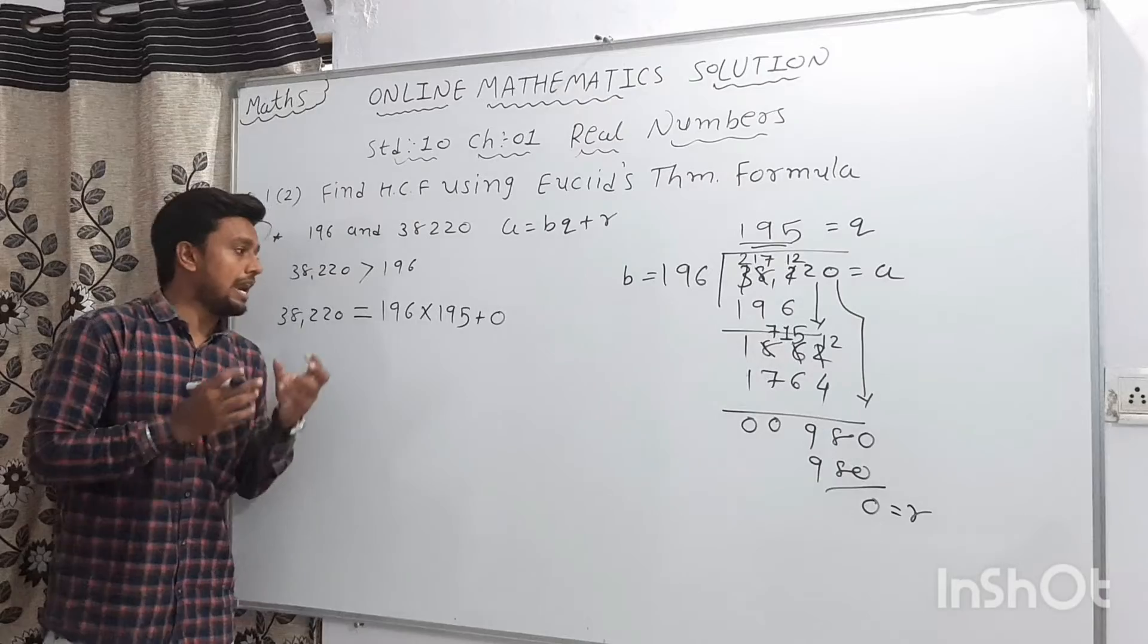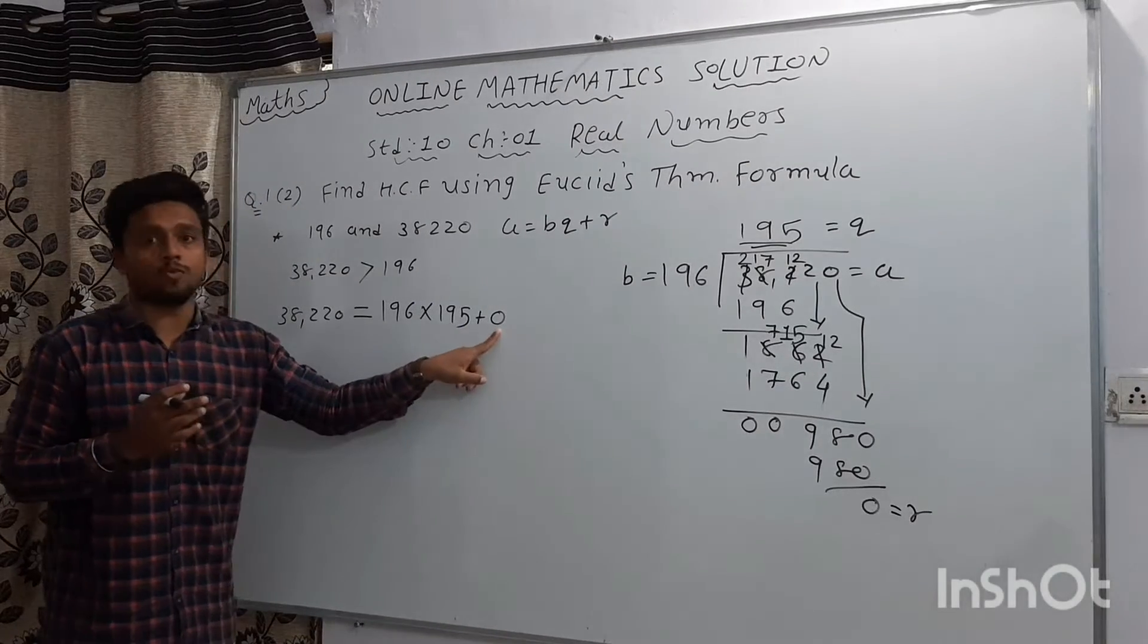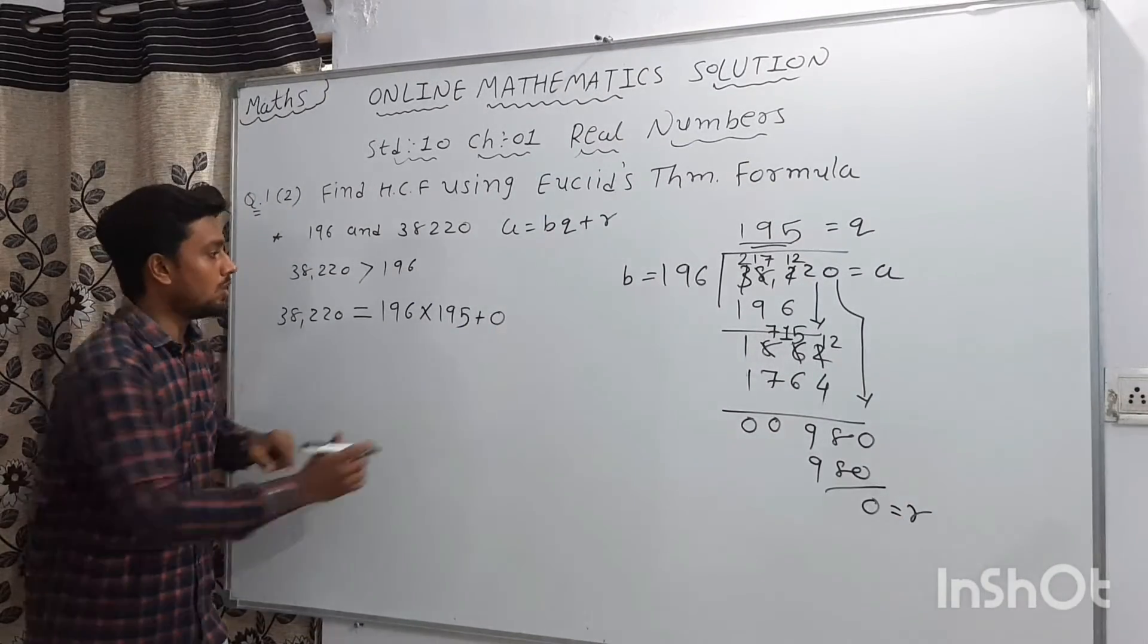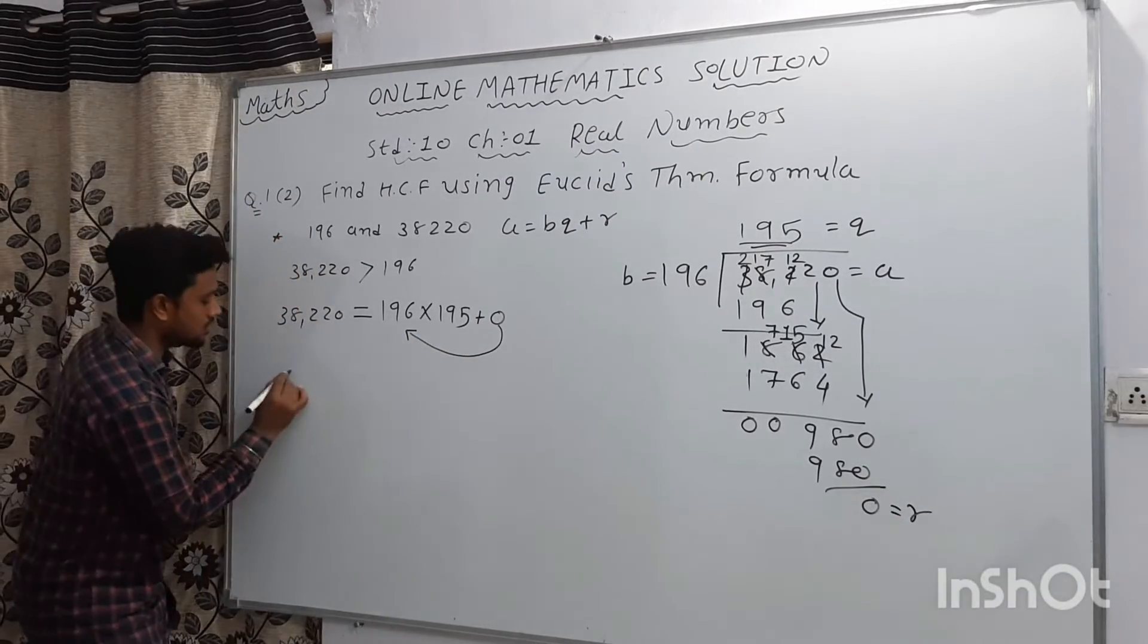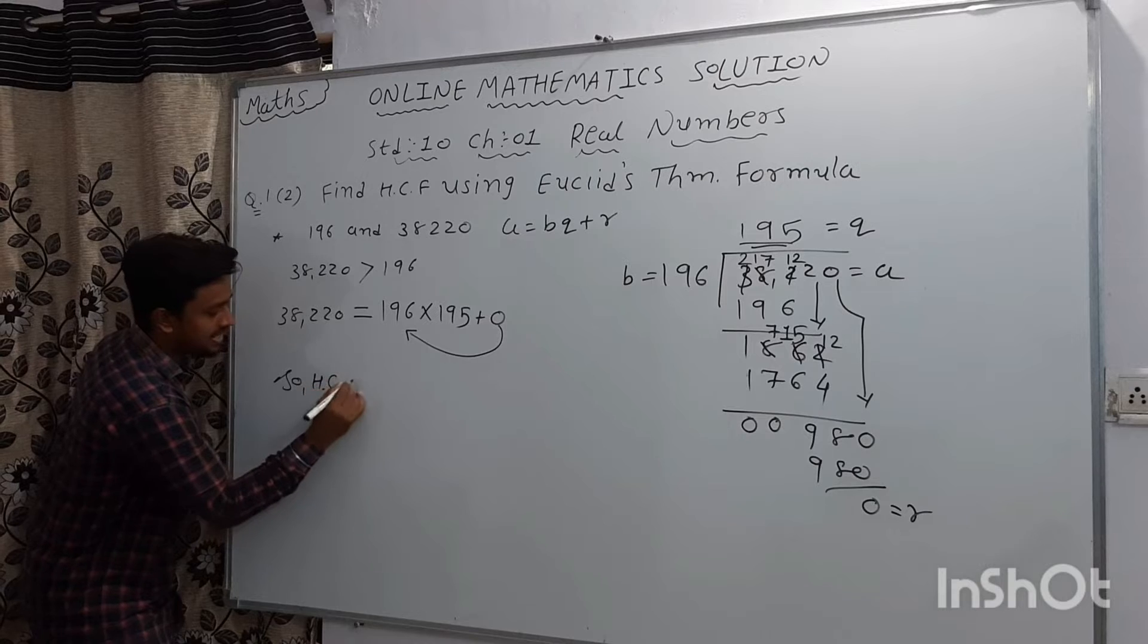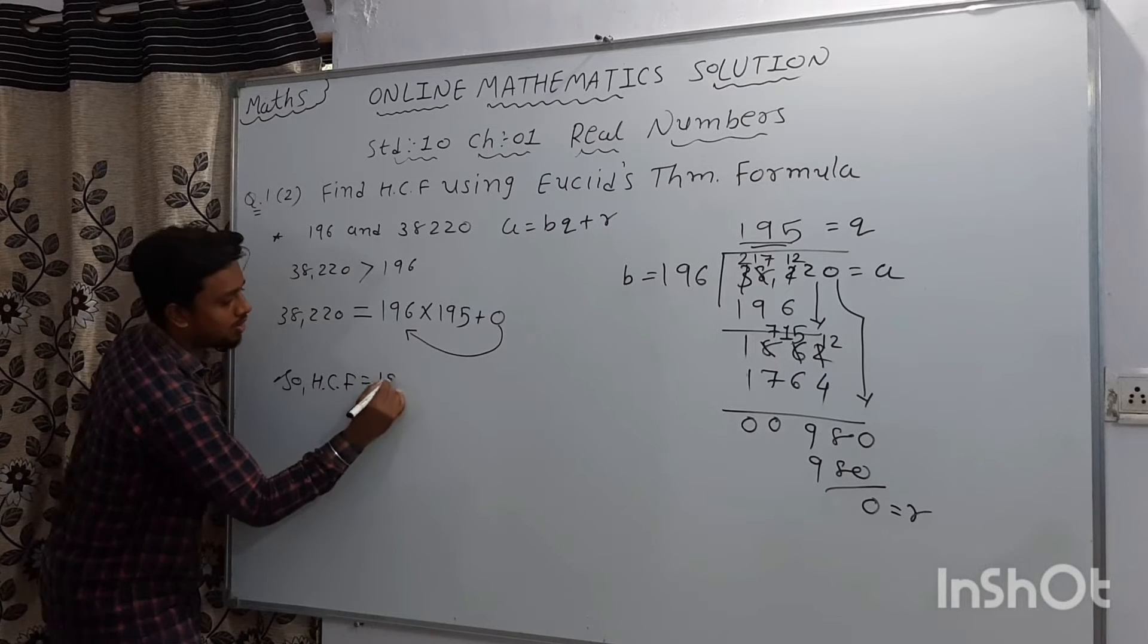So we calculate the sum. So we calculate the sum, last point of 0. So the zero's number of this equation is 196. So the HCF of this number is equal to 196.